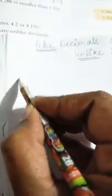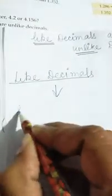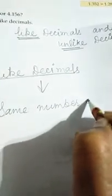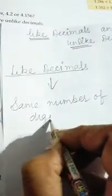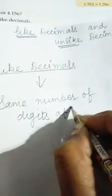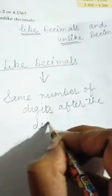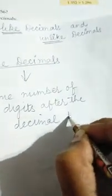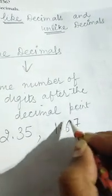Firstly, I will tell you what are like decimals. Like decimals are the decimals with the same number of digits after the decimal point. For example, 2.35 and 1.67 — here after the decimal there are two digits, and here after the decimal there are two digits, so these both are like decimals.